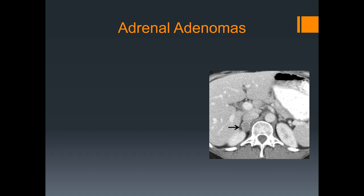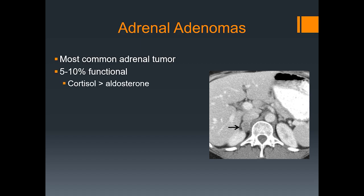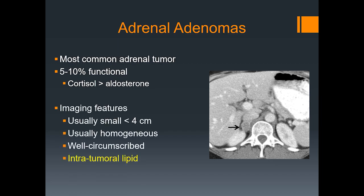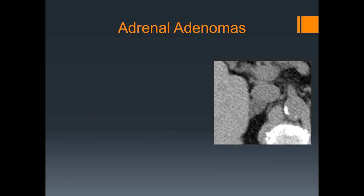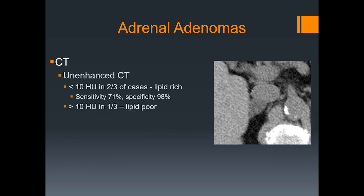The most common adrenal lesion is adrenal adenoma. About 5 to 10% are functional, most secreting cortisol and more rarely aldosterone. The imaging features: they are usually small, less than 4 centimeters, usually homogeneous, well-circumscribed, and the key feature is the presence of intratumoral lipid. On non-contrast CT, adenomas will measure less than 10 Hounsfield units in about two-thirds of cases — these are so-called lipid-rich adenomas — because the presence of fat lowers the attenuation of the nodule.